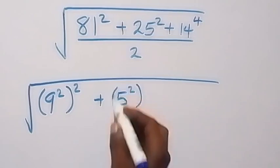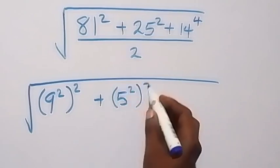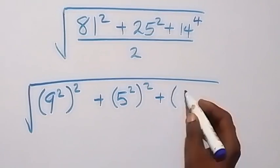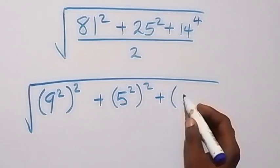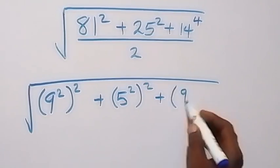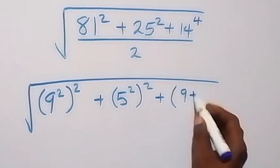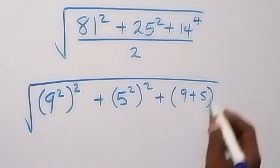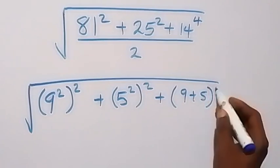Then also this squared, plus 14 — we can write this as 9 plus 5 — then which is raised to power 4, divided by 2.